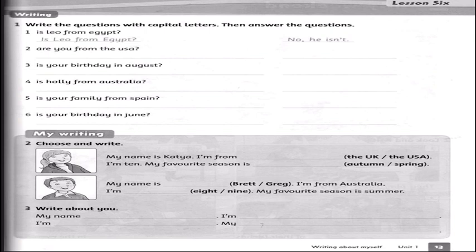Then: 'are you from the usa?' — we fix it: 'Are' must be capital because it's at the beginning of the sentence. 'USA' must also be capital because it's the name of a country. The rule is: change the first letter of the beginning of the sentence, names of countries, names of girls and boys, and names of people — all to capital letters. This is the end of the video; I hope everyone can benefit from it.